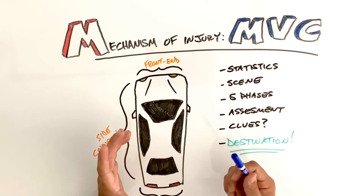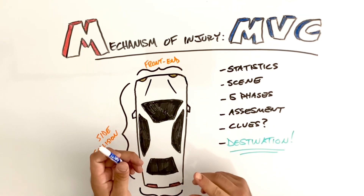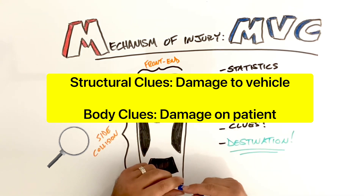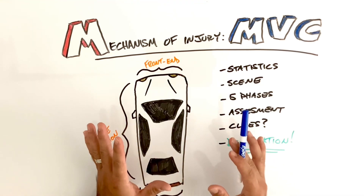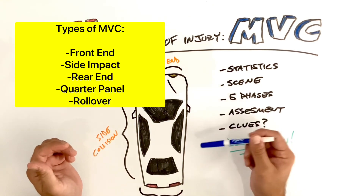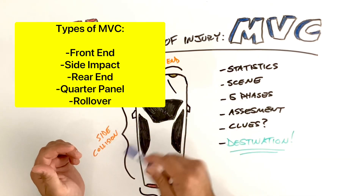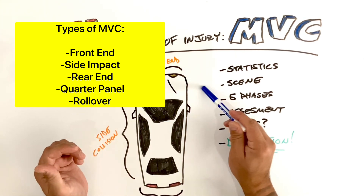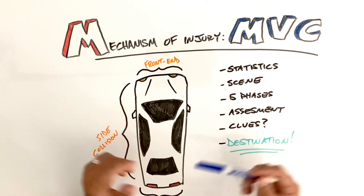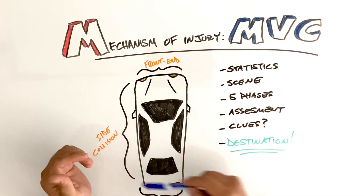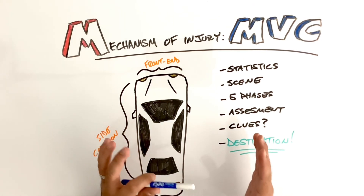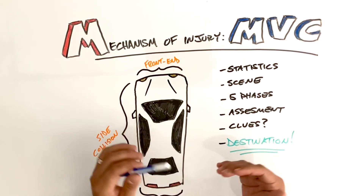Next, we're going to look at the assessment. There are what we call structural and body clues and the potential injuries of such. There are five different types of vehicle wrecks: front end collision, rear end collision, side collision, quarter panel strike, and rollover. We're going to talk about the main three that are most prevalent and how the damage to the vehicles can clue you into what's going on with your patient.